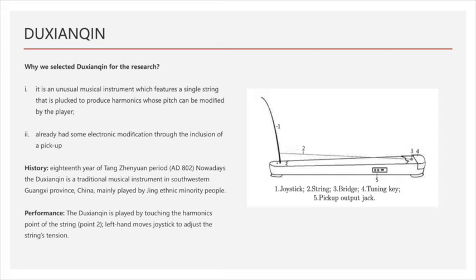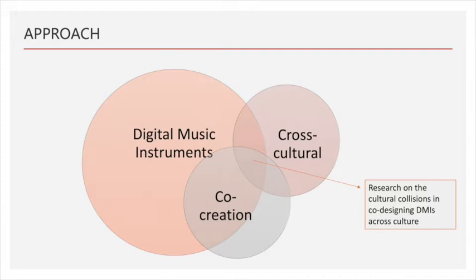As well as taking steps to preserve and reinvigorate traditional cultural heritage such as the Du Chen Qing and its performance practice, we can use digital technologies to reimagine elements of traditional cultural heritage to raise their public profile and expose them to new audiences. Our research in reimagining traditional elements through digital technology is at the intersection of digital musical instrument design, cross-cultural research and co-creation practice. The key aspect of this reimagining is that the essence of the traditional instrument is retained somehow through the digital technology.